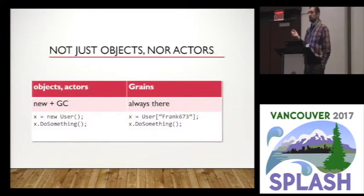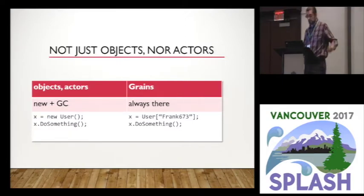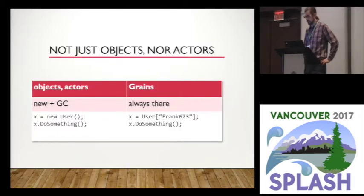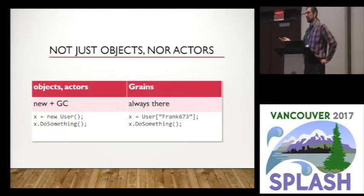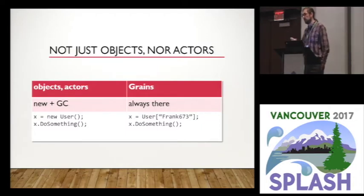The difference between a virtual actor and regular objects or actors: typically for objects or actors we think of them as something created before we use it — you say 'new' or allocate it, use it, and then it gets garbage collected. For grains, the thing is conceptually always there. When I ask for user Frank, I'm not creating a grain — I'm creating a reference to that grain. The system will automatically load it into memory if not already there, and if not used, it gets removed from memory like a cache, but it's not deleted — just temporarily not in memory, like virtual memory.